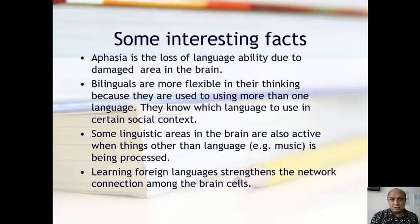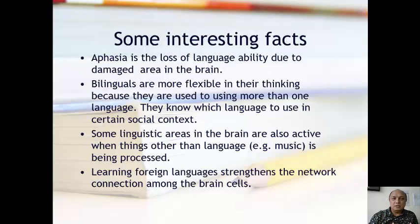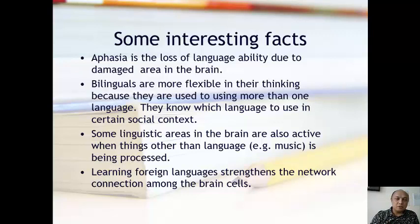Learning foreign languages strengthens the network connections among the brain cells. This is good if you want to avoid dementia or Alzheimer's, and if you don't want to become forgetful as you grow older, you should learn more foreign languages. By doing so, it strengthens the connections among your neurons, keeping them more resilient to decay — much like physical muscles: the more you exercise them, the stronger they become.